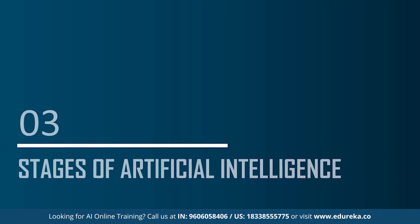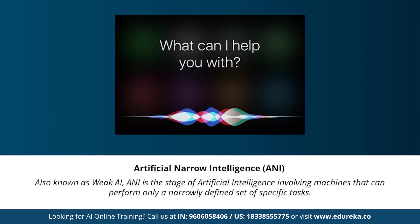Now let's understand the different stages of artificial intelligence. Many articles and videos state that artificial general intelligence, artificial narrow intelligence, and artificial super intelligence are the different types of AI. However, to be more precise, these are the three different stages of AI — the types and stages are completely different. Under the stages of AI, we have artificial narrow intelligence, artificial general intelligence, and artificial super intelligence.